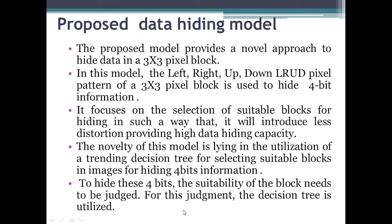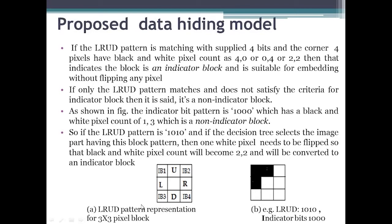As shown in the figure, the 3x3 pixel block is used and the pixel locations are nominated as L, U, R, D. The LRUD pattern is utilized to hide the 4-bit information. Whether a block is suitable for hiding or not is identified with the help of indicator bits, nominated as IB1, IB2, IB3, and IB4. If the LRUD pattern matches the supplied 4 bits and the corner 4 pixels have a black-and-white pixel count of 4-0, 0-4, or 2-2, then that block is an indicator block and is suitable for embedding without flipping any pixel — meaning we hide 4 bits without changing any pixel.